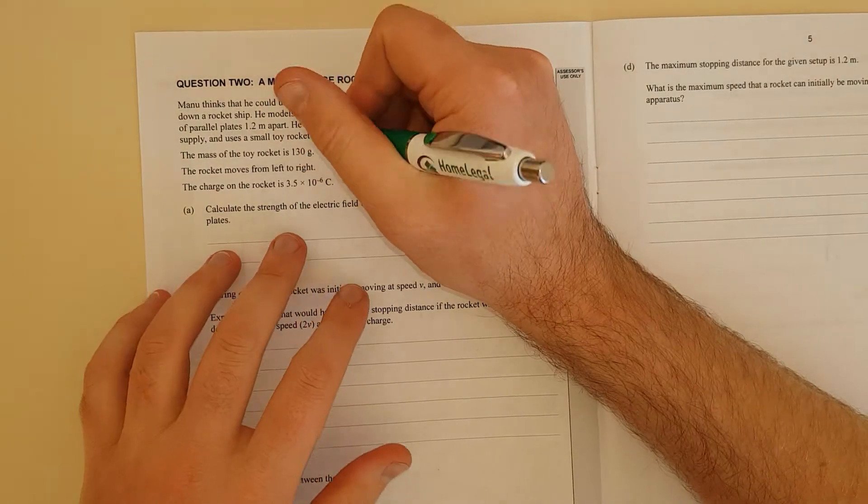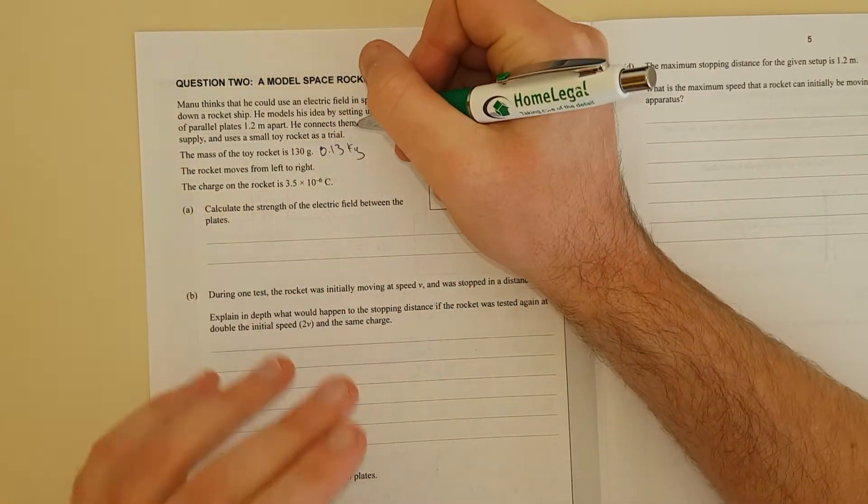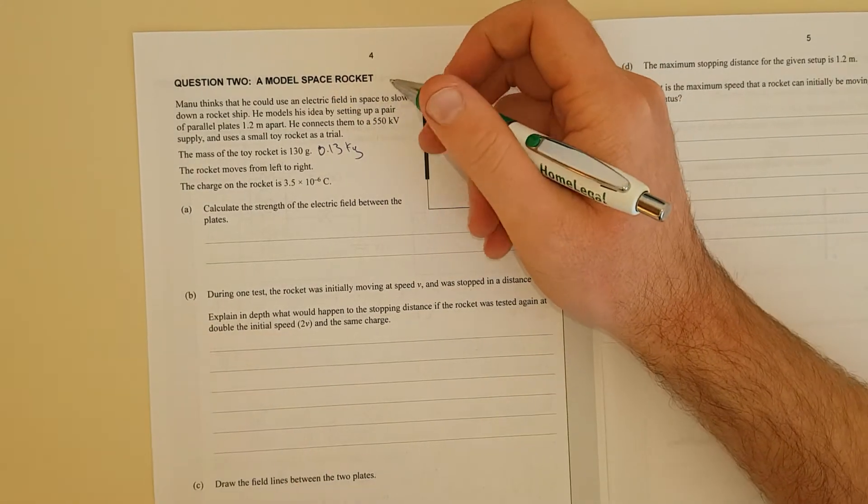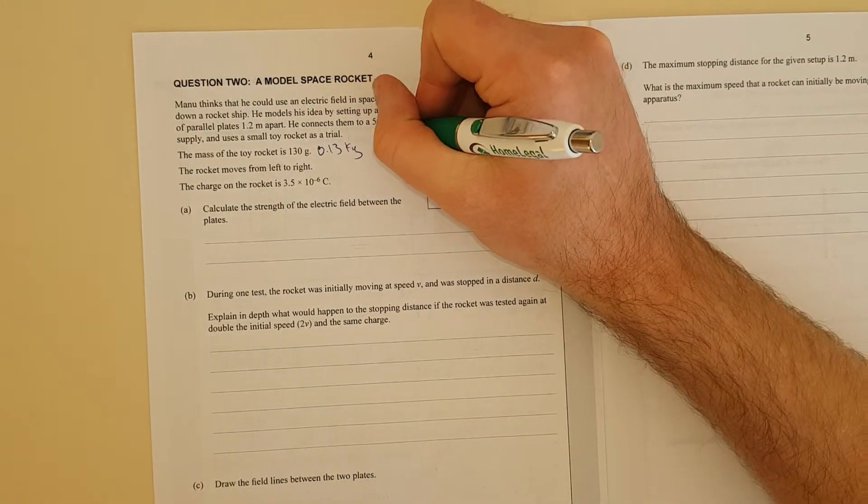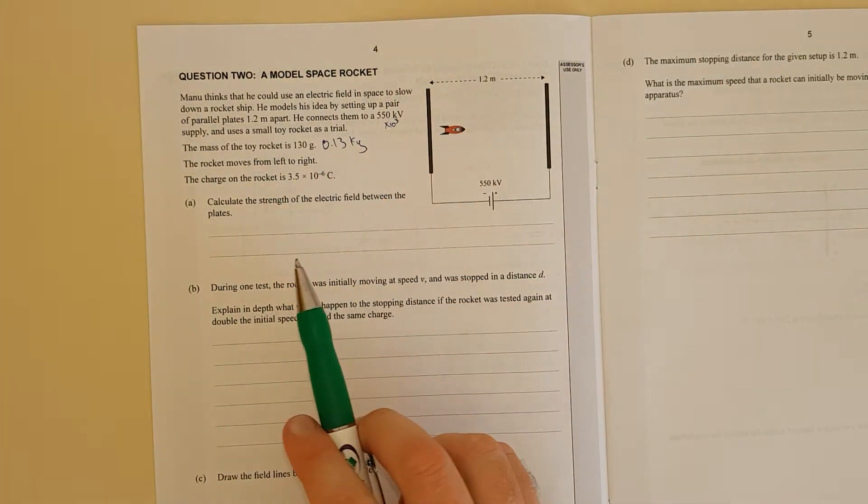The rocket's 130 grams, I'll write that as 0.13 kilograms. You should always do this because everything needs to be SI units. The voltage is 550 times 10 to the 3 because it's 55 kilovolts, so it's 1,000 and that's SI units as well.